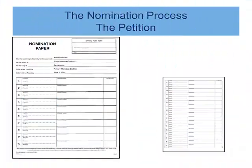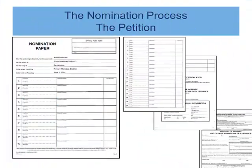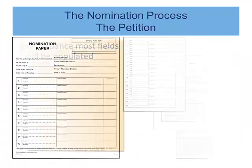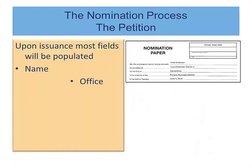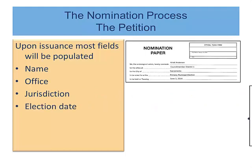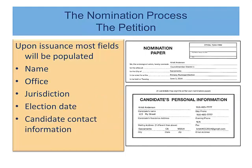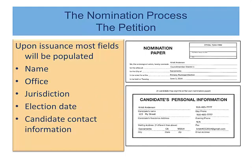When the candidate is issued the nomination petition, most of the fields will be populated by the city clerk: the candidate's name, the office, the jurisdiction, the election date, and the candidate's contact information.